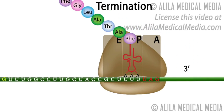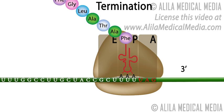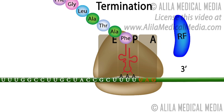Termination happens when one of the three stop codons is positioned in the A site. No tRNA can fit in the A site at that point, as there are no tRNA that match that sequence. Instead, these codons are recognized by a protein — a release factor.